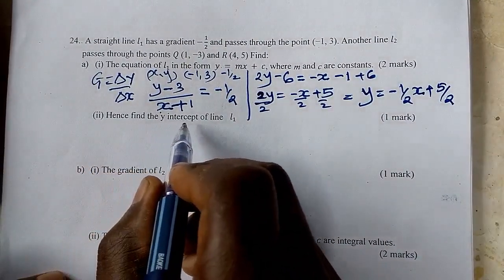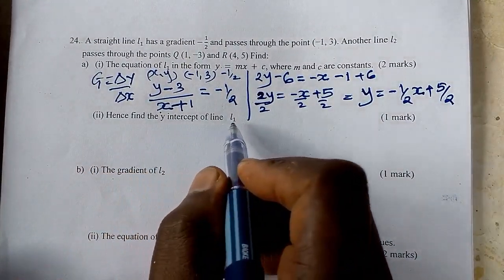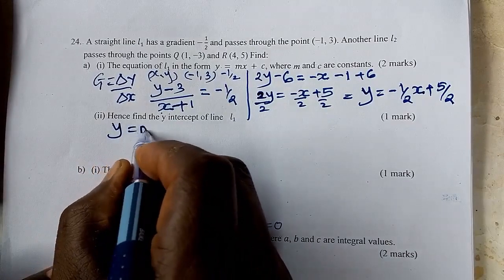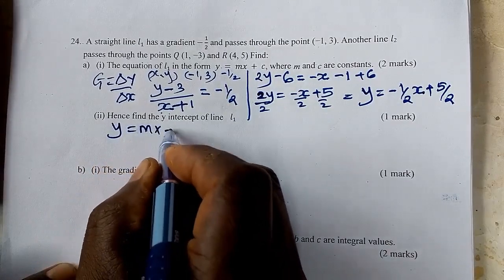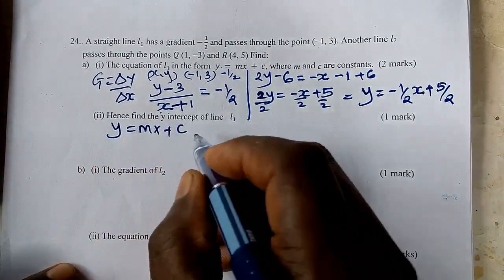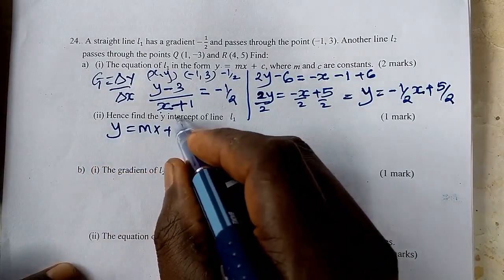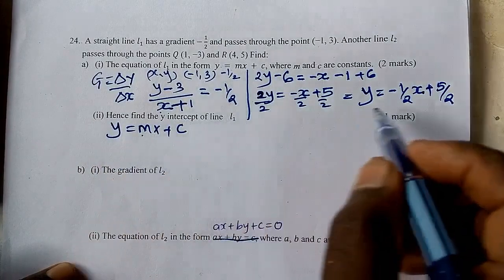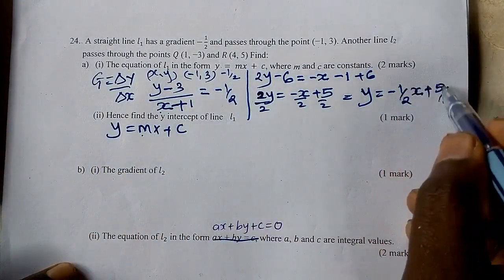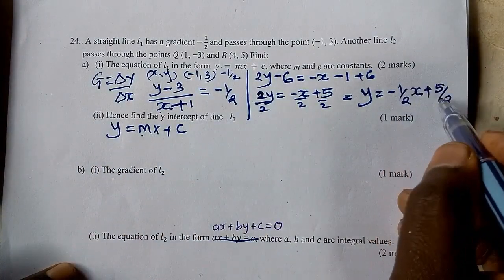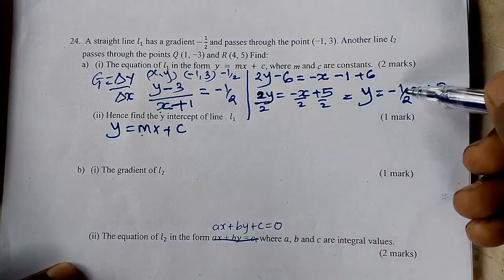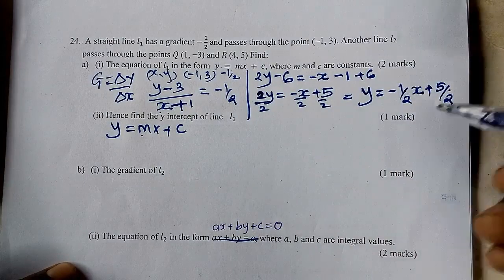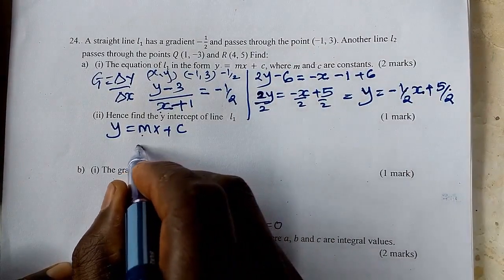Hence, find the y-intercept. Whenever you write y equals mx plus c, c is the y-intercept and m is the gradient. So to get the y-intercept in this equation, we just look at c. So the y-intercept is five over two.